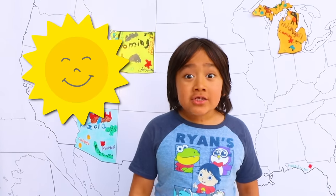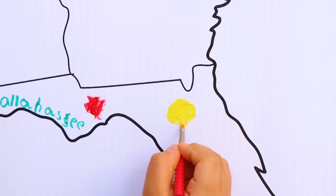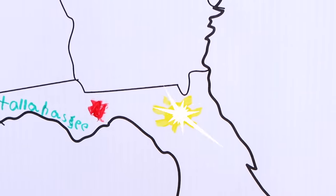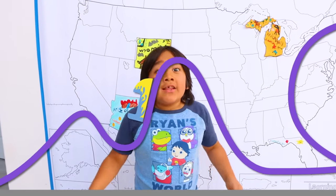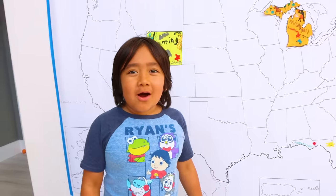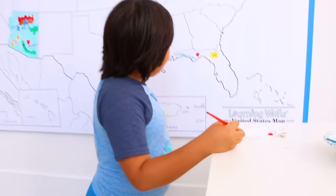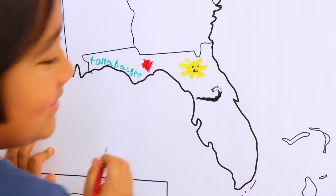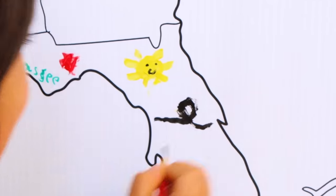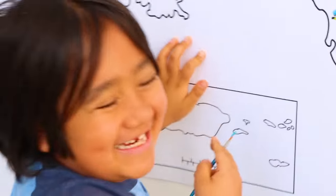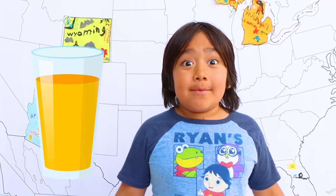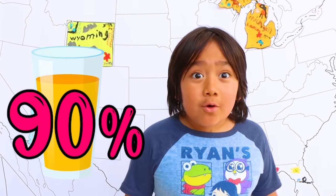Florida's nickname is the Sunshine State because it gets a lot of sunshine through the year. I'm going to draw the sun right here - my sunshine is smiling. Florida also has a lot of amusement parks like Disney World and Universal. I'm going to draw a roller coaster ride. Florida produces the oranges that make about more than 90% of America's orange juice.